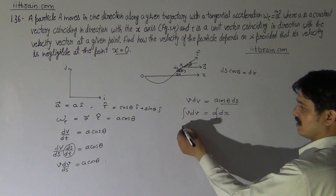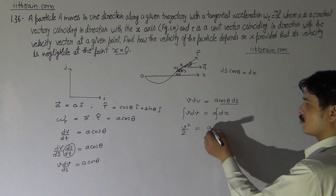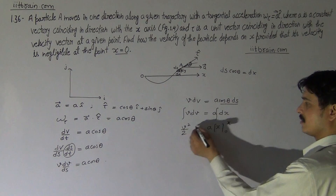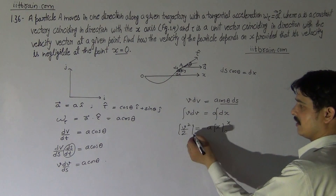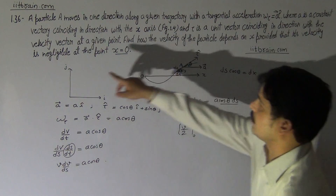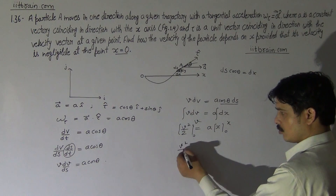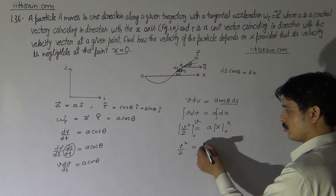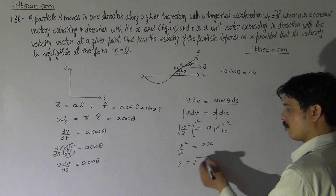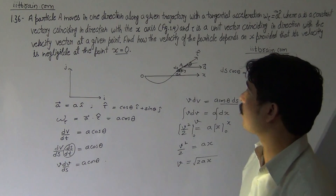Now integrating both sides, since A is a constant we take it outside. Integrating V dV = A dX with limits: velocity from 0 to V and x from 0 to X, because at x = 0 velocity is zero. We get V²/2 = AX, so V = √(2AX). This is the answer.